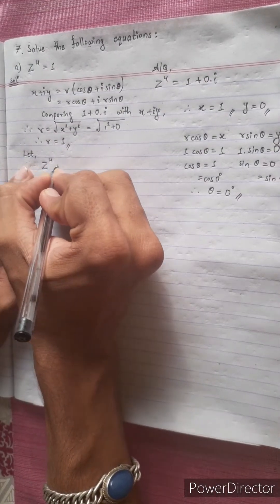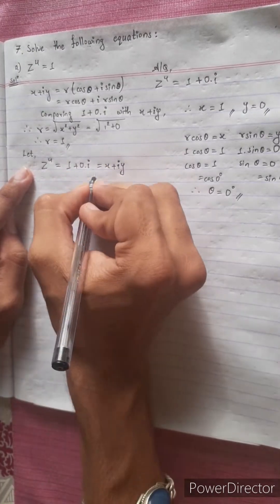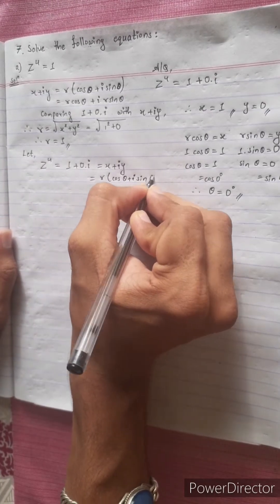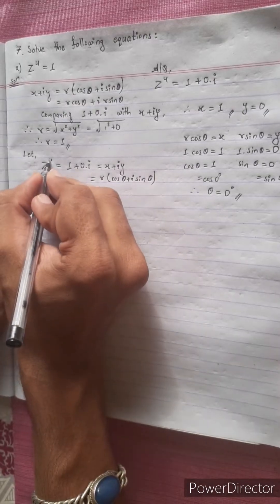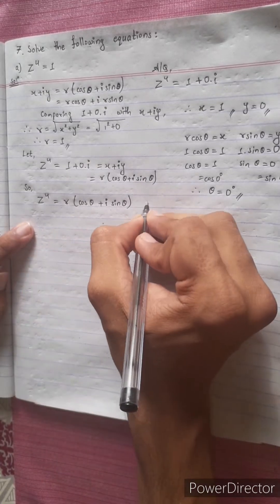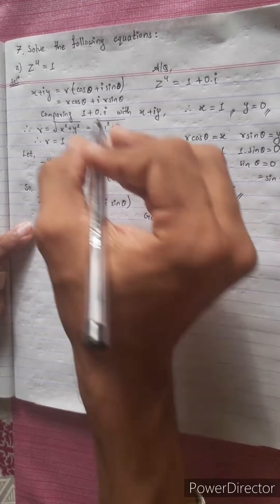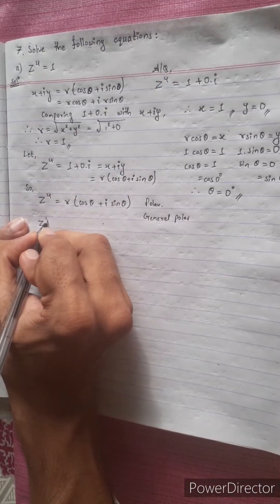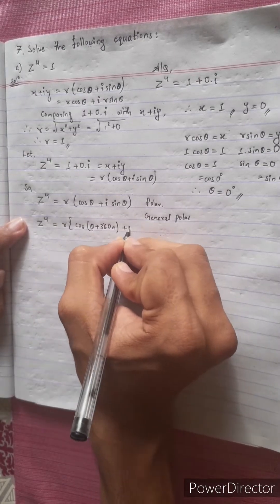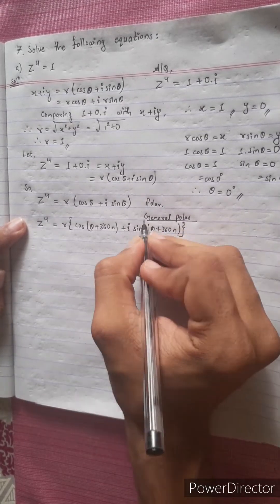Let z to the power 4 equal to 1 plus 0 into i. Let x plus iy equal to r cos theta plus i sin theta. The general polar form is: r cos(theta plus 360n) plus i sin(theta plus 360n).